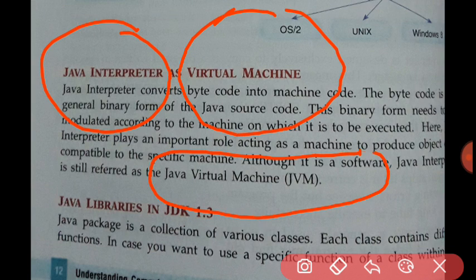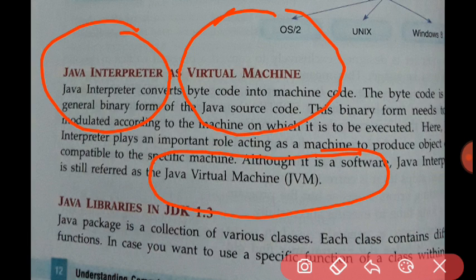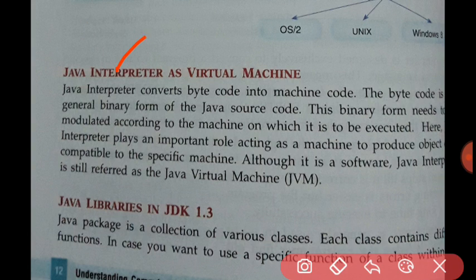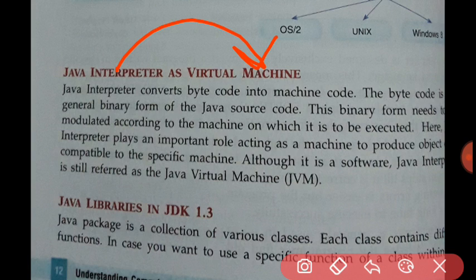In Java, we call the Java interpreter a virtual machine, or JVM — Java Virtual Machine. It does not exist physically; that is why we call it virtual, because it is in the form of software. Software is a set of instructions given to the computer to perform certain tasks. The JVM takes the byte code and converts it into machine code — that is the work of the Java interpreter or virtual machine.